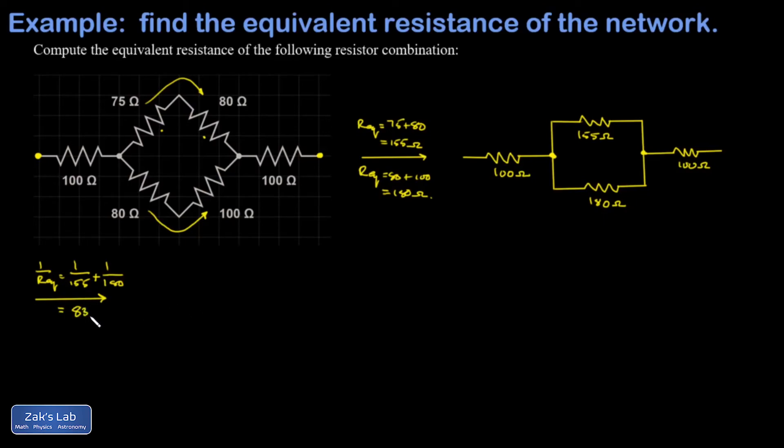I redraw the circuit again. Finally, these last three resistors are clearly in series, and so I just add them up. So I'm going to write Req = 100 ohms.